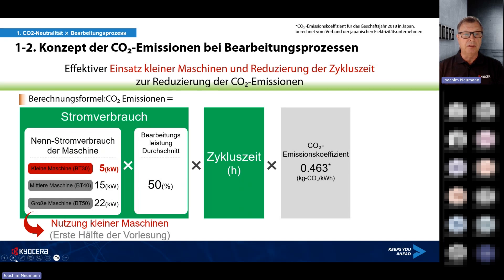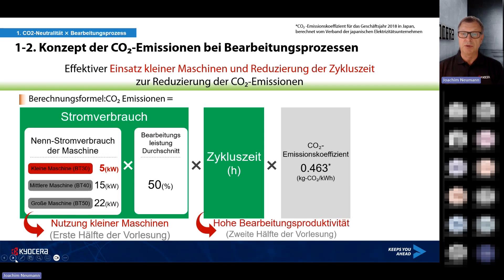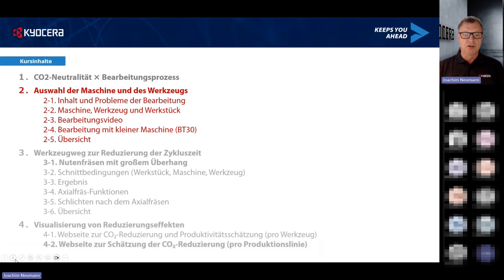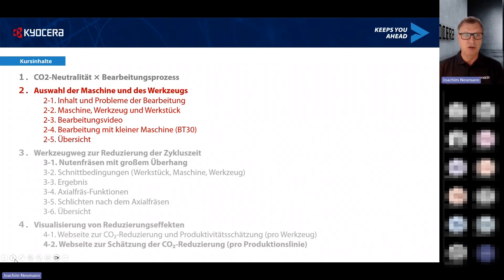Im ersten Teil der Vorlesung spreche ich über die Nutzung kleiner Maschinen, im zweiten Teil gehe ich in die hohe Bearbeitungsproduktivität. Bei der Auswahl der Maschine und des Werkzeugs stellen wir die wichtigsten Punkte der Werkzeug- und Maschinenauswahl für den effektiven Einsatz kleiner Maschinen vor – speziell eine BT50- und eine BT30-Maschine. In Kapitel 3 schauen wir uns dann die Bearbeitung aufgrund von Veränderungen der Zykluswege an.